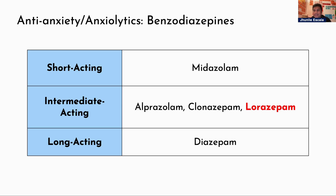For short-acting benzodiazepines, we have midazolam. Midazolam is usually used for seizures, most commonly for acute seizure attacks. For intermediate-acting, we have alprazolam, clonazepam, and lorazepam. For long-acting, we have the most famous one — diazepam.